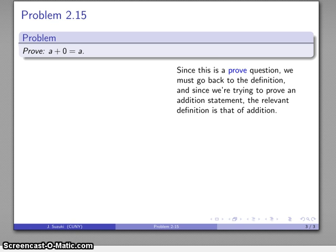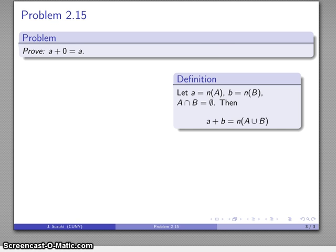So addition is going to be defined as follows: if I have a set with cardinality A, another set with cardinality B, and the two sets have nothing in common, then addition defines the sum of the cardinalities to be the cardinality of the union of the two sets.